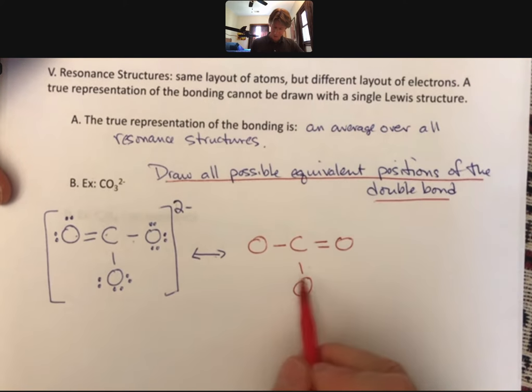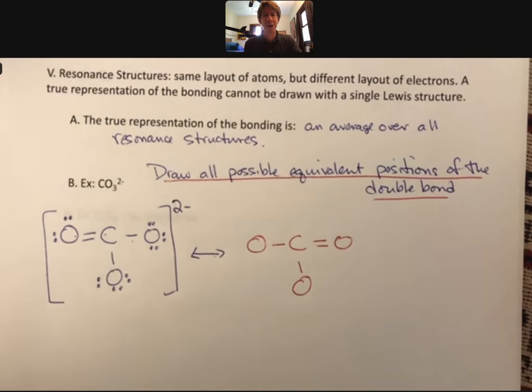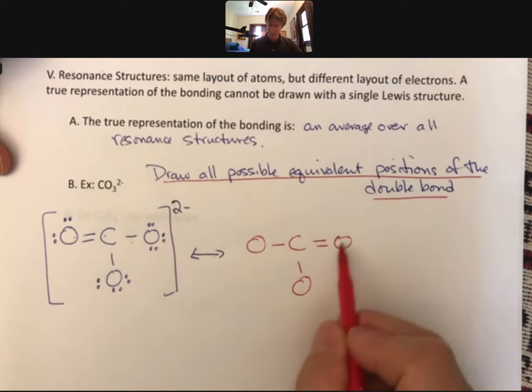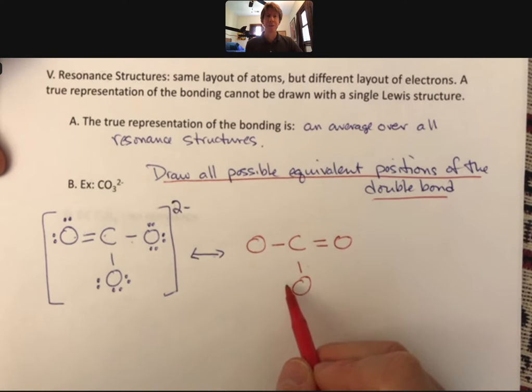And then I could also have drawn the double bond down here. You'll note that all of these only have one double bond. It's like the double bond is moving around. But you'll also notice that I draw all of the oxygens and the carbons in the same relative positions. The positions of the atoms don't change.